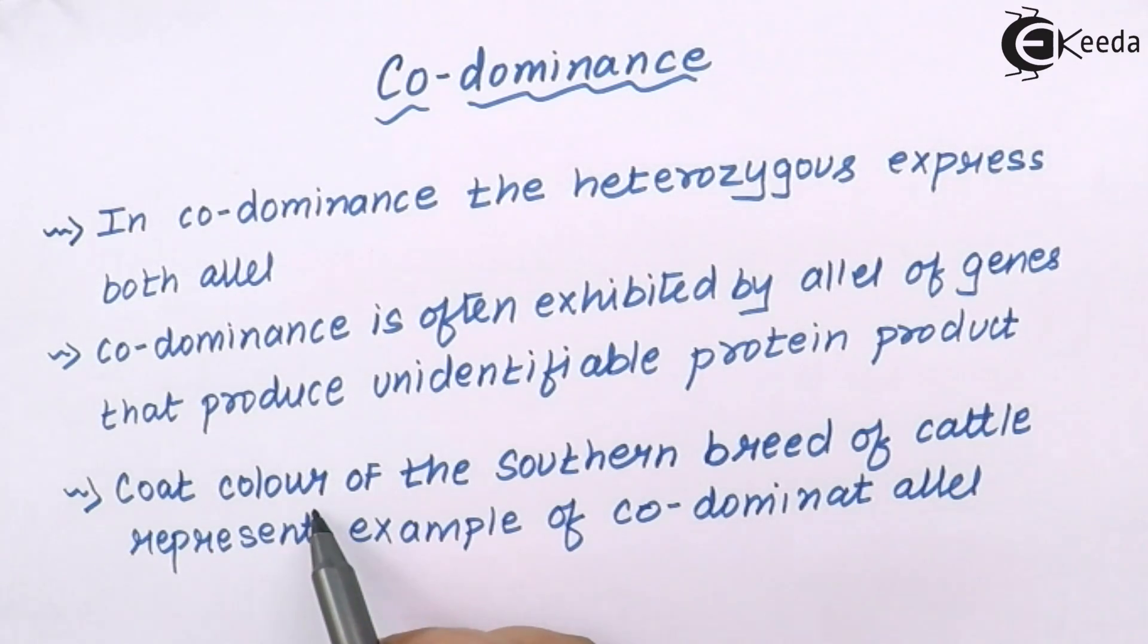An example in real life would be the coat color or the upper covering of the southern breed of cattle. This represents a codominant allele. In real life, it could be your pink rose color which is an example of codominance.